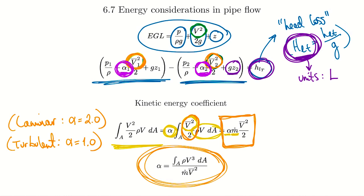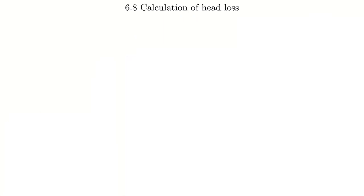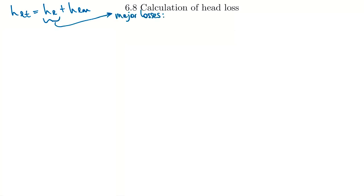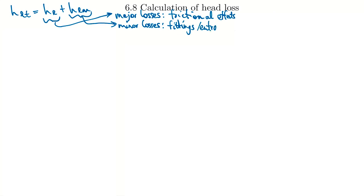Now moving along to section 6.8: calculation of head loss. The total head loss is the sum of major losses plus minor losses. Major losses are frictional effects — the friction along the pipe wall. The minor losses term uses subscript M for minor losses from fittings, entrances, area changes, and so forth — mostly fittings like valves and elbows. For major losses, we need to find what's called a friction factor.